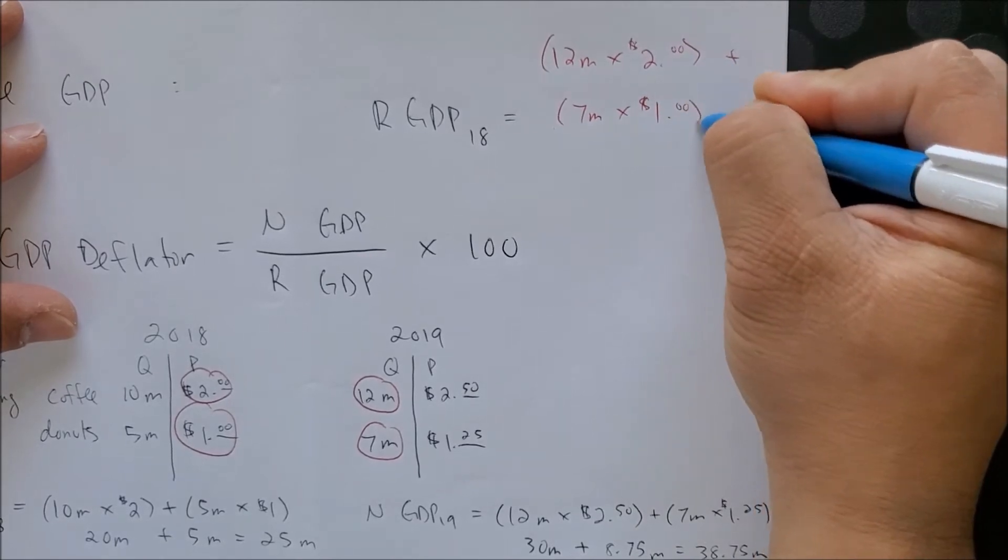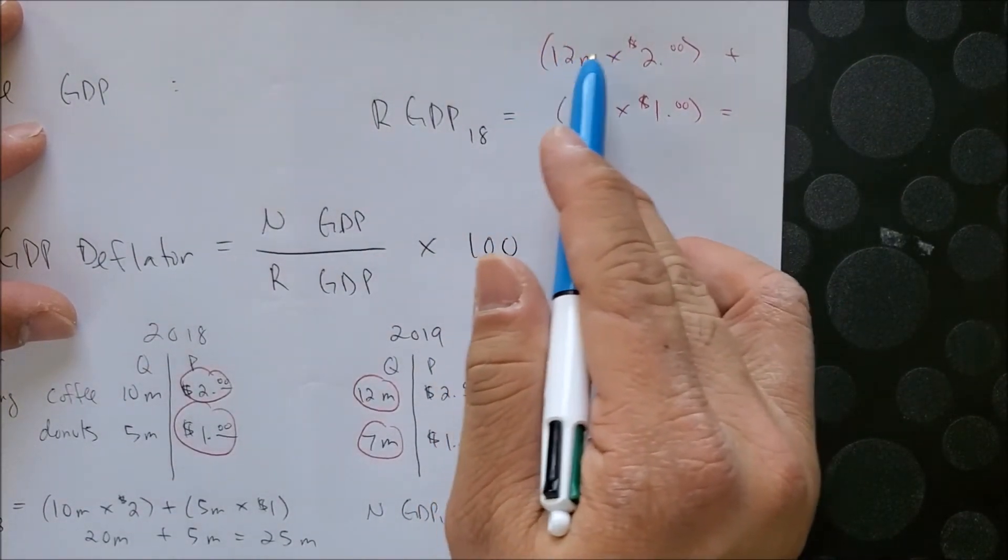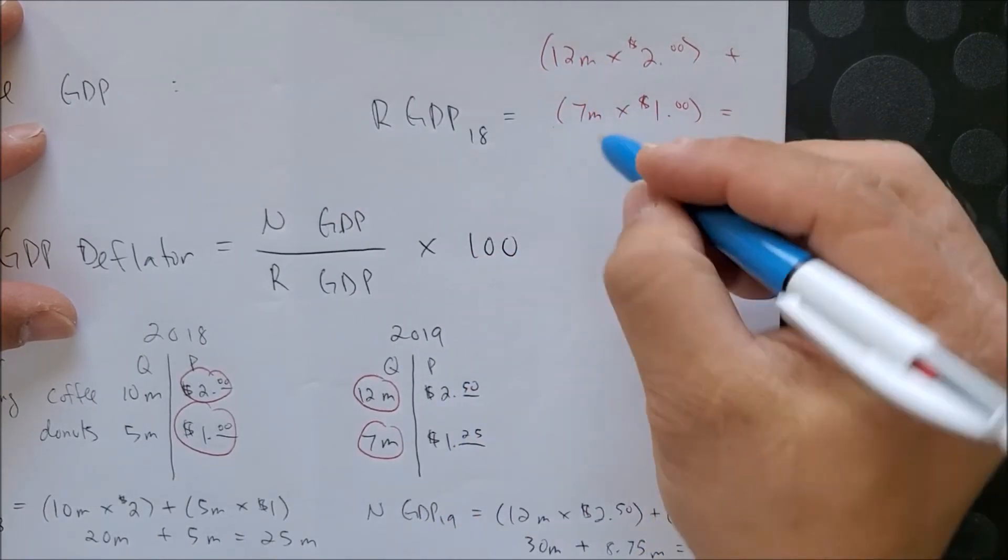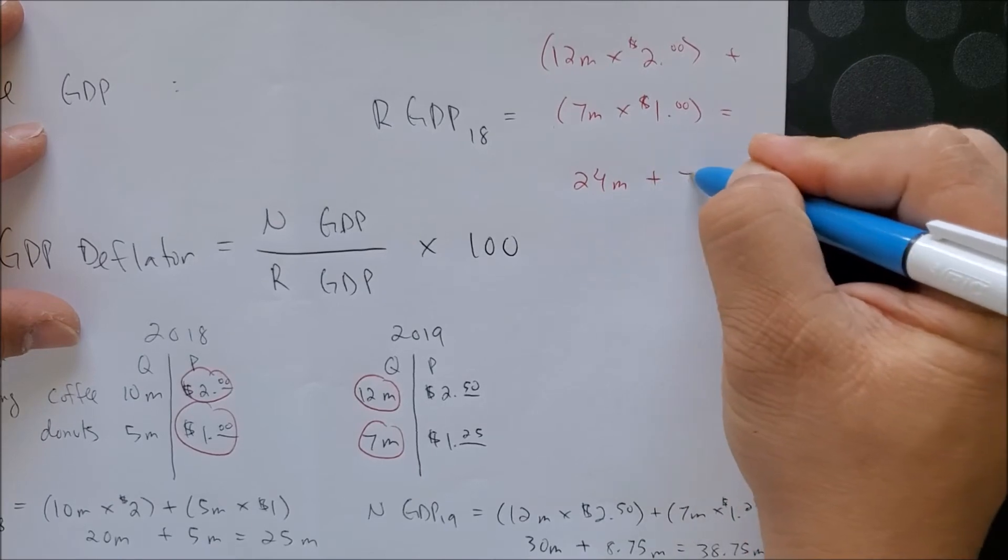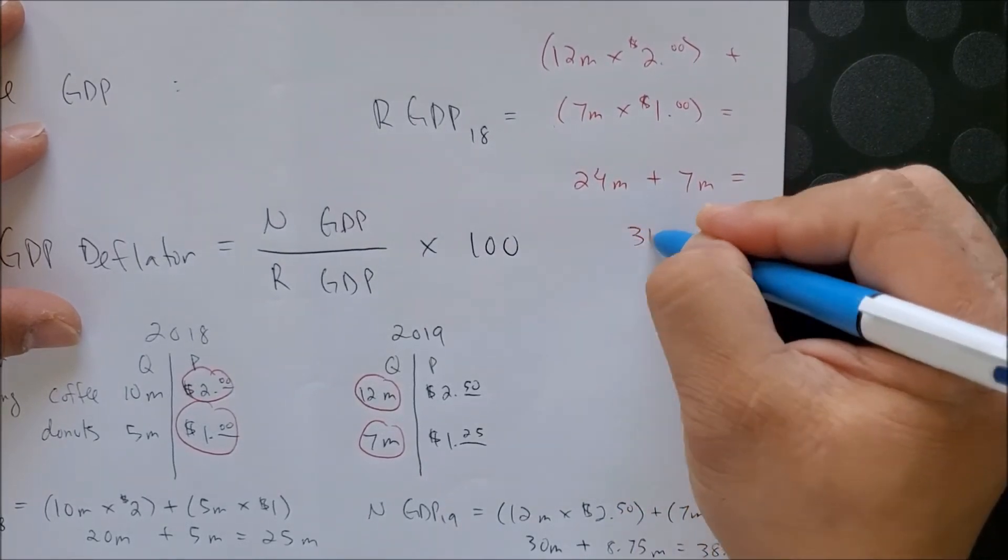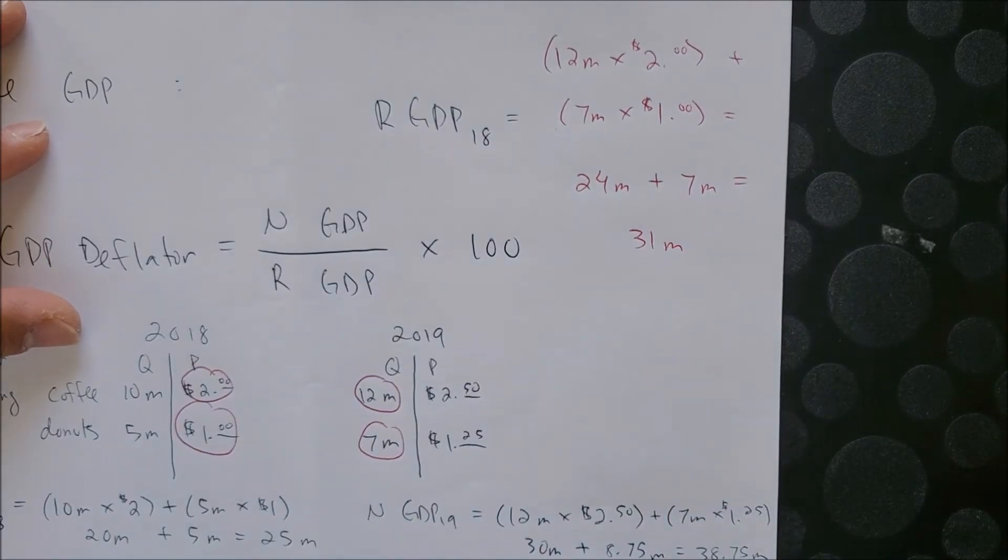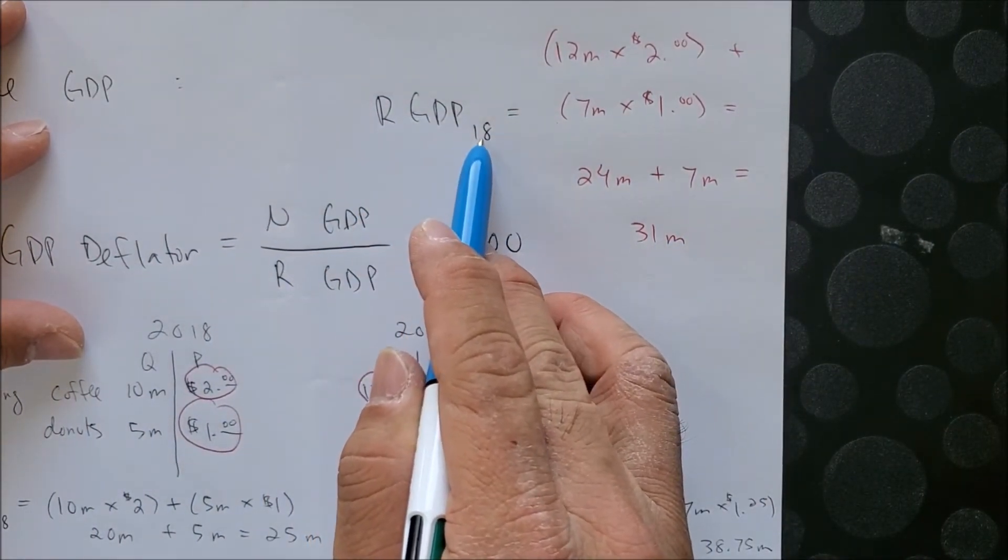And when we calculate both coffee and doughnuts, we get 24 million for coffee plus 7 million for doughnuts for a total of 31 million. And this represents the real GDP with a base year of 2018.